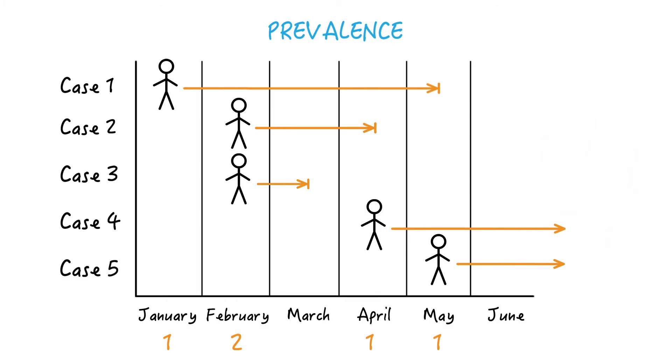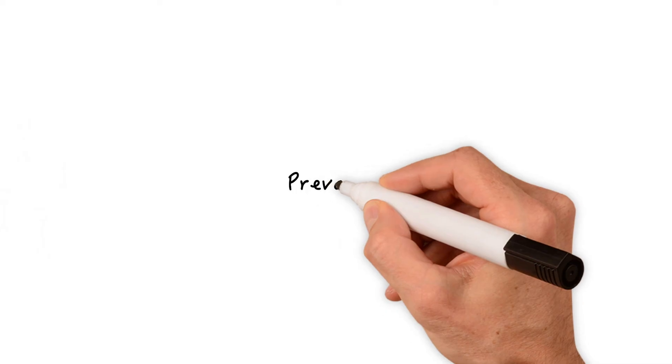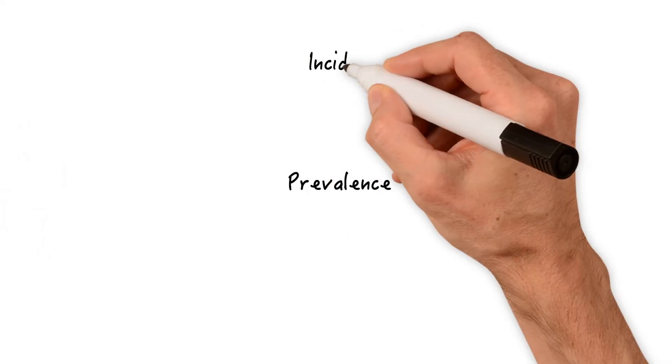Let's also just focus on the numerator or the prevalent cases during each month. We have one case in January, three cases in February, three in March, three in April, three in May, and two in June. So prevalence is determined by how many people join the prevalence pool or the incidence, and how many leave the prevalence pool through death or cure.